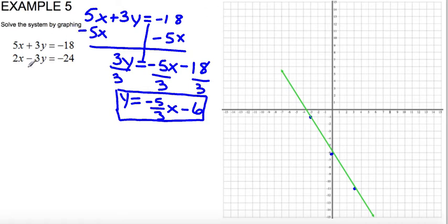I do the same thing for the second equation. I have to get the second equation in slope-intercept form. So I rewrite it and solve for y. I subtract 2x on both sides.